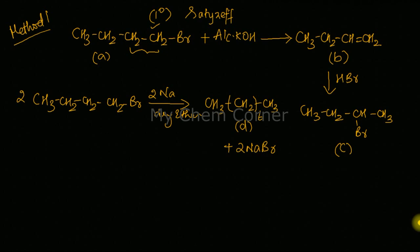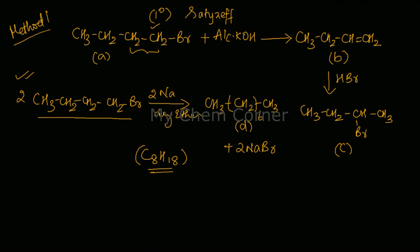However, the problem states that compound D should not be equal to what is obtained when n-butyl bromide is reacted with sodium. Since n-butyl bromide is itself a straight-chain compound, its Wurtz reaction also gives octane — the same molecule. So this method fails, and this particular structure of A cannot be used.